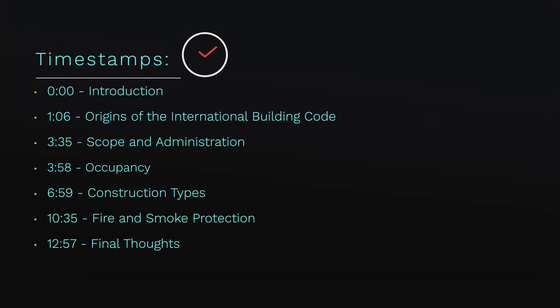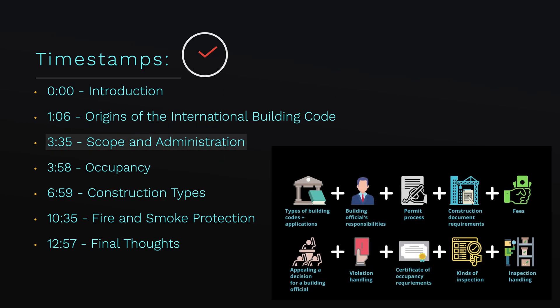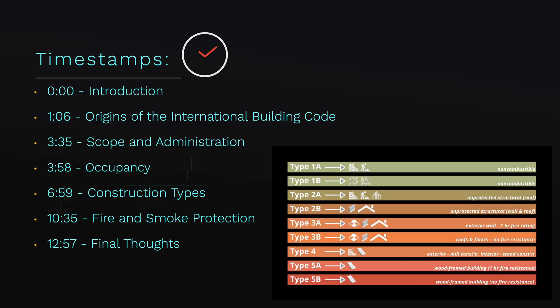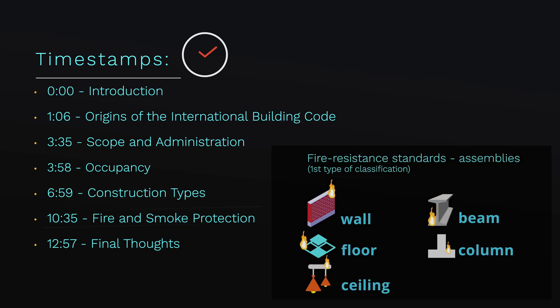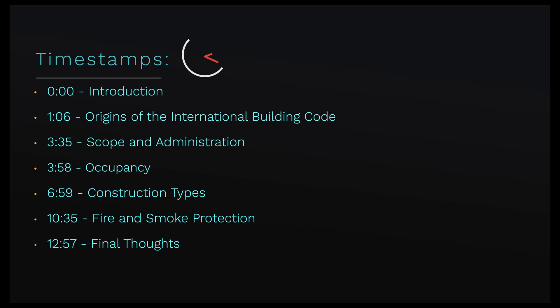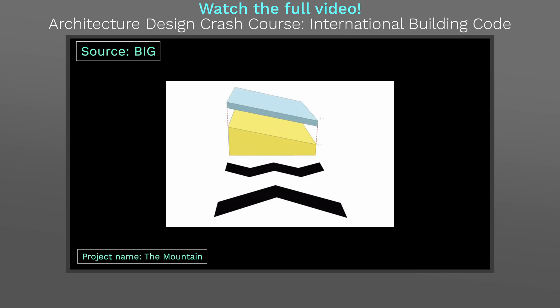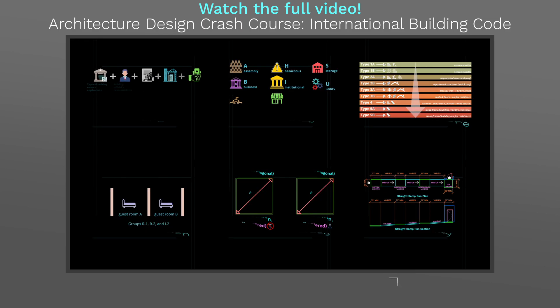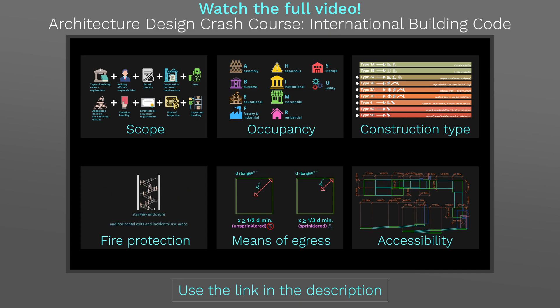For this one, we will focus on the origins of the International Building Code, scope and administration, occupancy, construction types, and fire and smoke protection. You can use these timestamps for your convenience. This video is part one of the video we released earlier. If you want to watch the full 35-minute video, you can click the banner or use the link provided in the description.